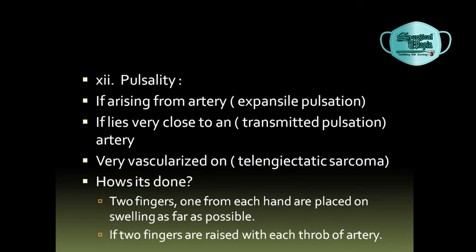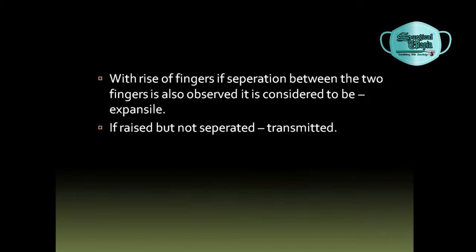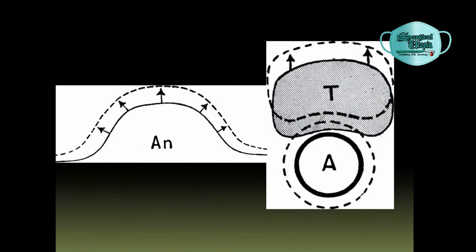Pulsatility should be checked — if the swelling arises from an artery it will exhibit expansile pulsation; if it lies very close to an artery it will exhibit transmitted pulsation; and if the swelling is highly vascularized, such as in telangiectatic sarcoma, pulsation will also be present. Pulsatility is checked by placing two fingers, one from each hand, on the swelling as far apart as possible. With every throb of the artery, if the fingers rise but do not separate, it is transmitted pulsation. If there is separation between the two fingers with every throb, it is expansile pulsation.